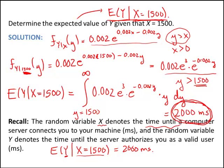We've run this problem from start to end. We started with a joint distribution. From the joint, we got a marginal density function. From the marginal, we built a conditional density function. And given the conditional density function, we found expected values for the random variable y given x. There are a lot of neat things you can do once you get into conditional probabilities. I hope this example has enlightened you and made you less fearful of the notation and meanings behind conditional probability density functions.